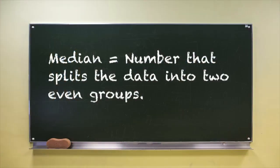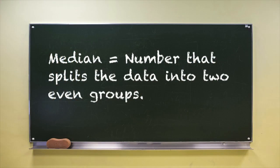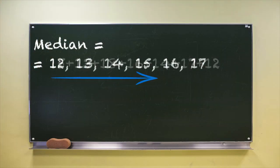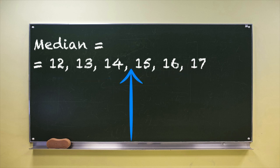Median is the middle of a data set. It is the number that splits the data into two even groups. Sounds easy, right? Well, it is, but you have to remember one very important fact: in order to find the median, you first have to order your data from the smallest value all the way to the largest value. Then you can find the middle.